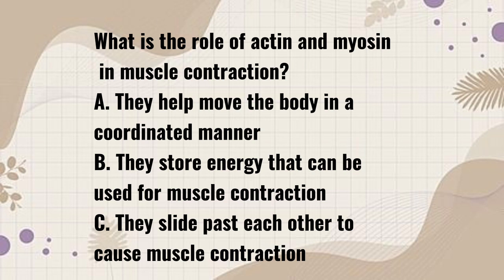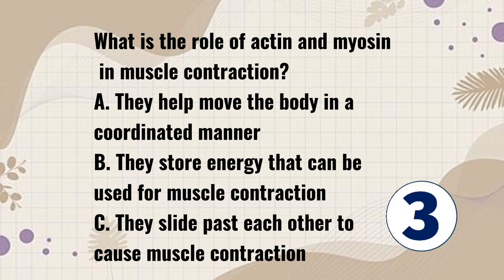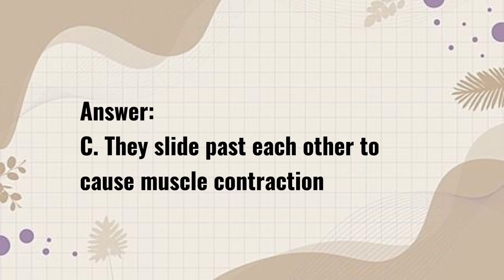What is the role of actin and myosin in muscle contraction? A. They help move the body in a coordinated manner. B. They store energy that can be used for muscle contraction. C. They slide past each other to cause muscle contraction. Answer: C. They slide past each other to cause muscle contraction.